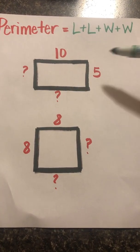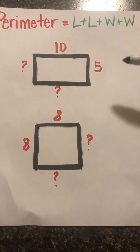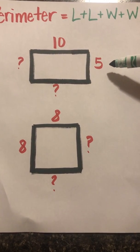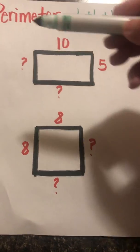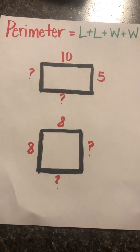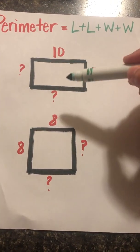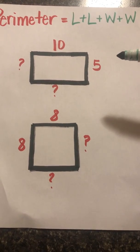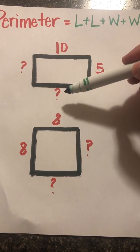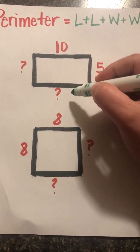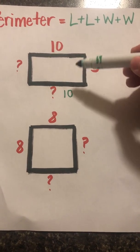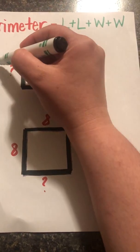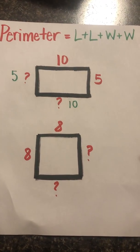When we look at this rectangle, we can see that there are some things we know right off the bat. We know that this side equals ten units and this side equals five units, but we are missing this side length and this side length. Well, in a rectangle, opposite sides are the same length. So if this side is ten, this side would also be ten units. And if this side is five units, this side would also be five units, because opposite sides on a rectangle are equal.